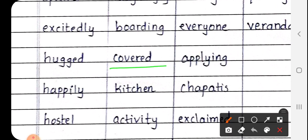Next covered, C-O-V-E-R-E-D. Covered means dhaka hua. Kitchen, K-I-T-C-H-E-N. Kitchen means rasoi ghar. Next is activity, A-C-T-I-V-I-T-Y. Activity means gatividhee or some pravruti.